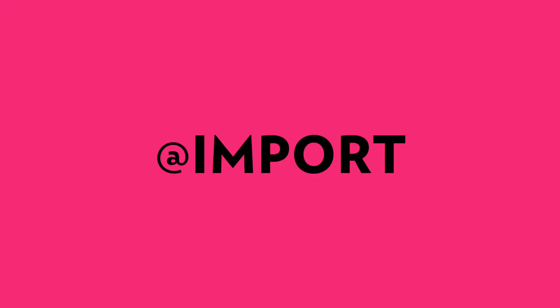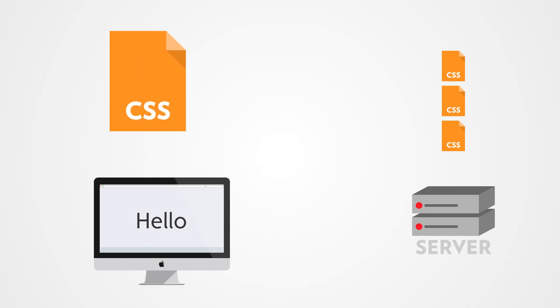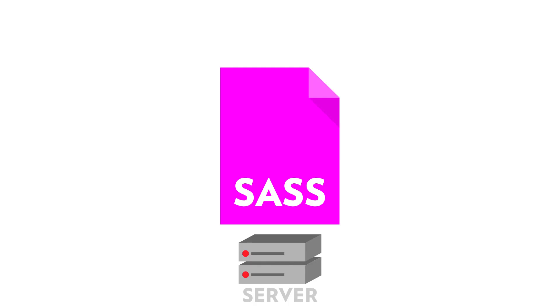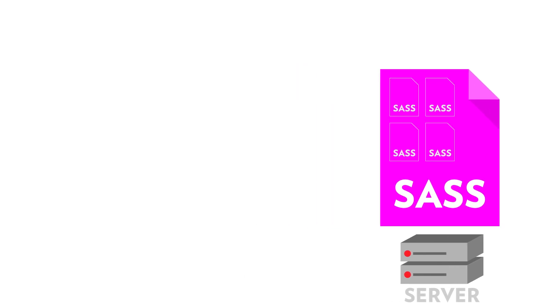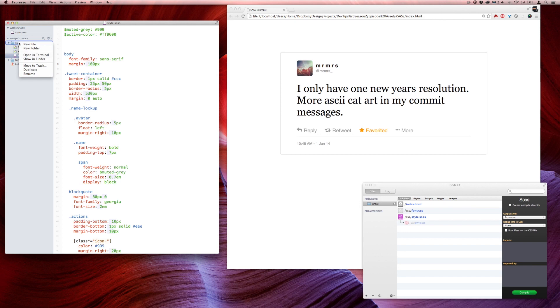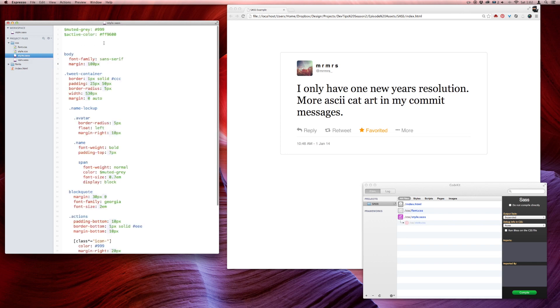If I had to choose only one feature to take with me on a desert island of SASS, it would be imports for sure. SASS builds on top of the current CSS imports, but instead of requiring an HTTP request, SASS will take the file that you want to import and combine it with the file you're importing it into, so that you have a single CSS file that you're serving to the web browser. This is a really small project but you can still see how it works.